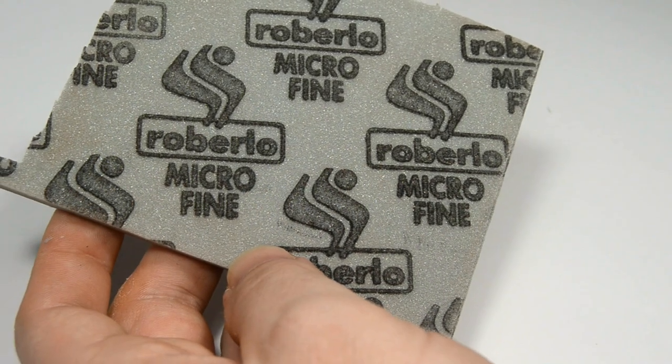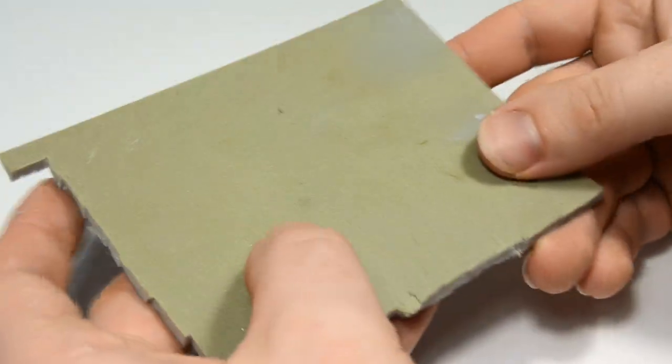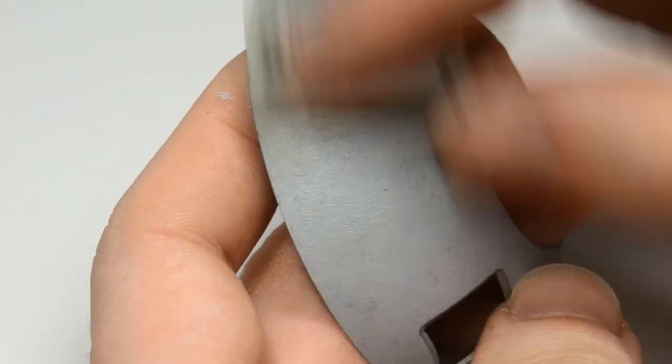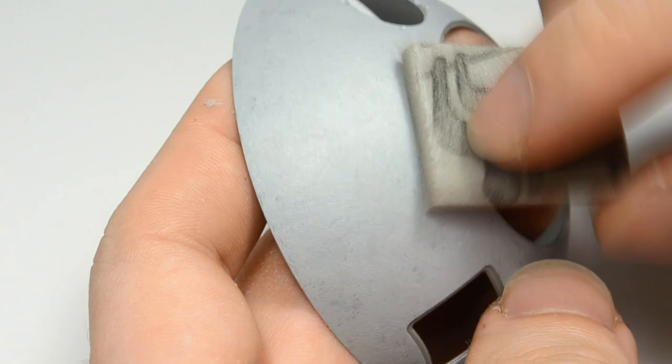I will use a super fine sanding sponge to polish the texture. It's best to do this before you glue any details to the model so you won't break them while sanding.